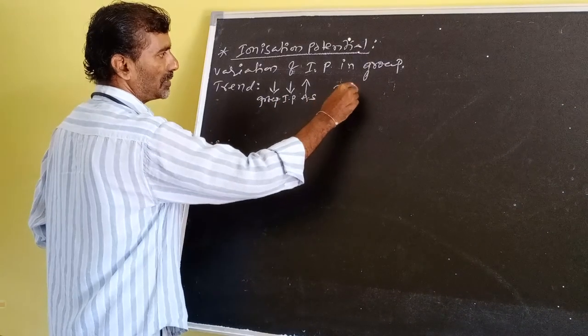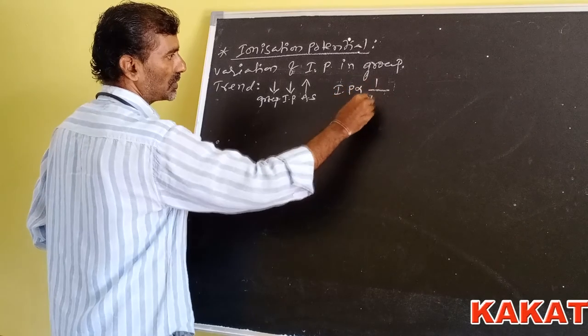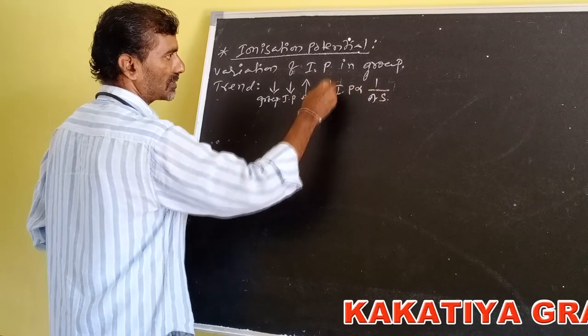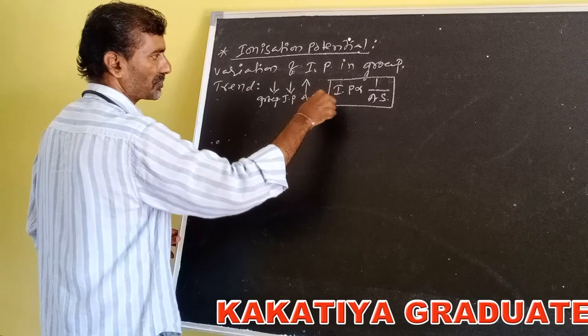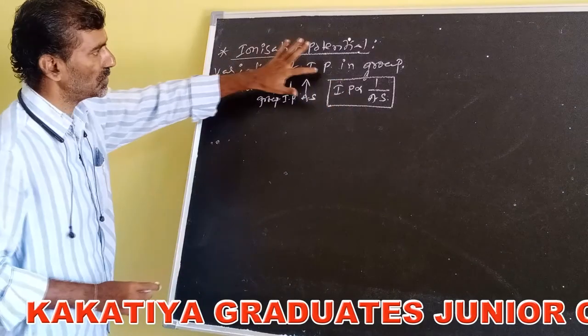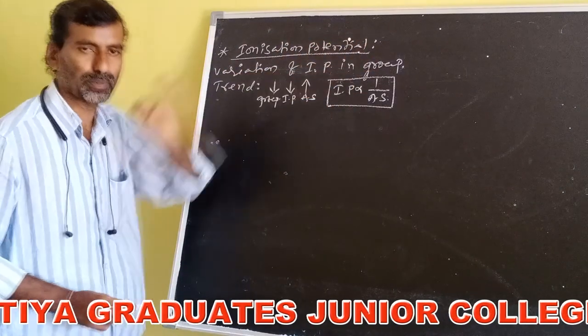IP is inversely proportional to atomic size. This is about variation of ionization potential values in the group.